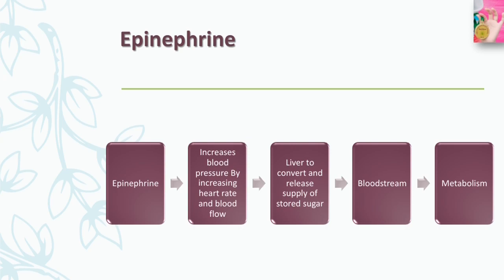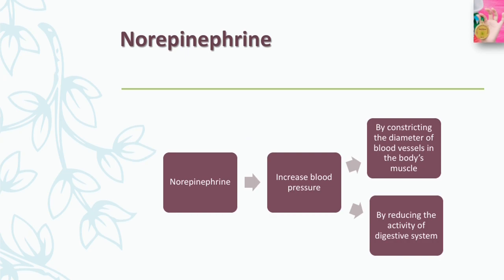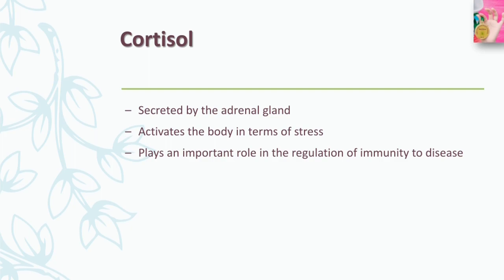The effects of these two hormones are quite similar but can be distinguished in terms of their most potent activity. Epinephrine increases blood pressure by increasing heart rate and blood flow, causes the liver to convert and release stored sugar into the bloodstream, and increases the rate at which the body uses energy — the process known as metabolism — sometimes by as much as 100% over normal. Norepinephrine also increases blood pressure, but does so by constricting the diameter of blood vessels in the body's muscles and by reducing the activity of the digestive system.